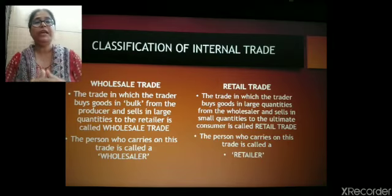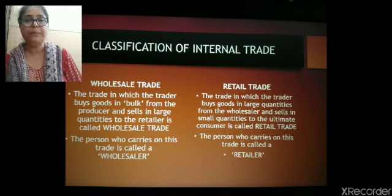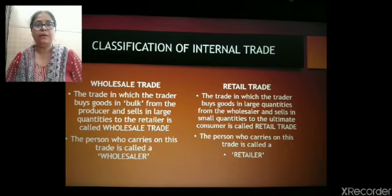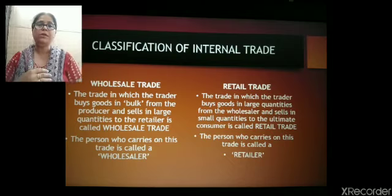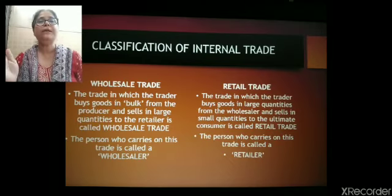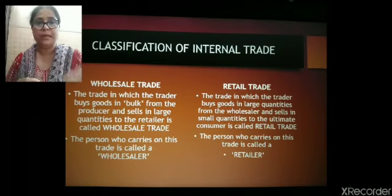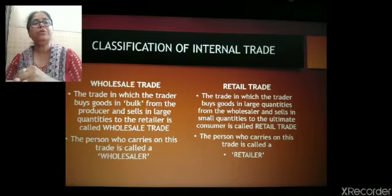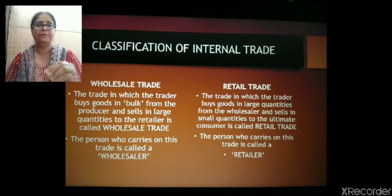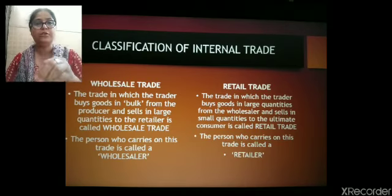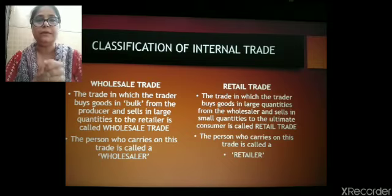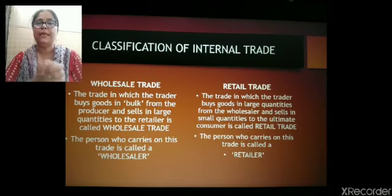The other link in the chain of distribution is the retailer. A retailer buys goods in some large quantities from the wholesaler and sells them to the ultimate consumer in single units or in very small quantities. So the trade in which the trader buys goods in large quantities from the wholesaler and sells in small quantities to the ultimate consumer is called retail trade, and the person who carries on this trade is known as the retailer.